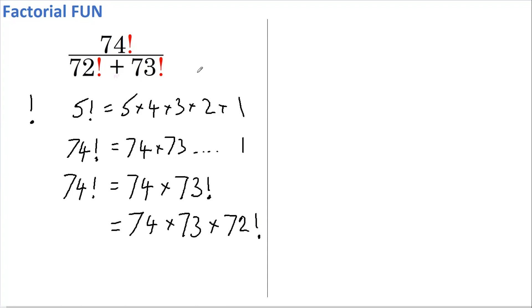So now let's look at our question. If we write 74 factorial as 74 times 73 times 72 factorial and then we divide this by 72 factorial plus 73 multiplied by 72 factorial.